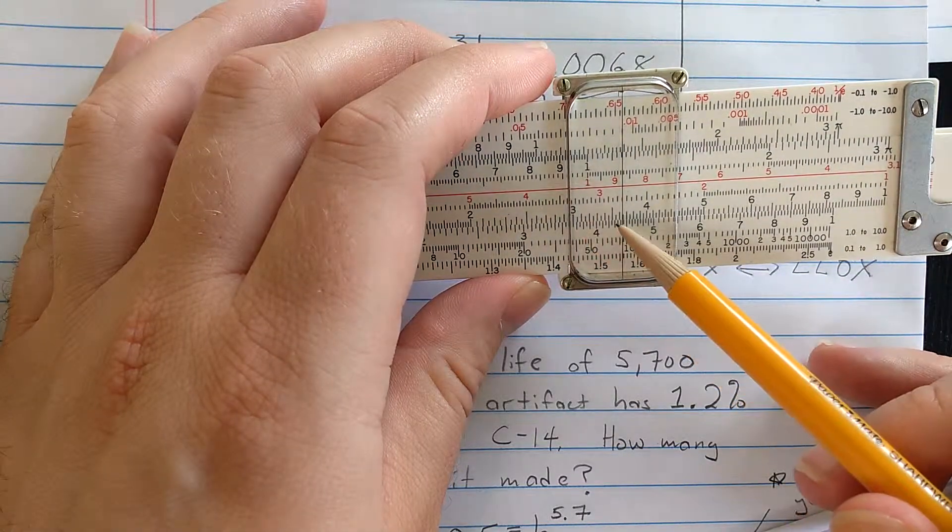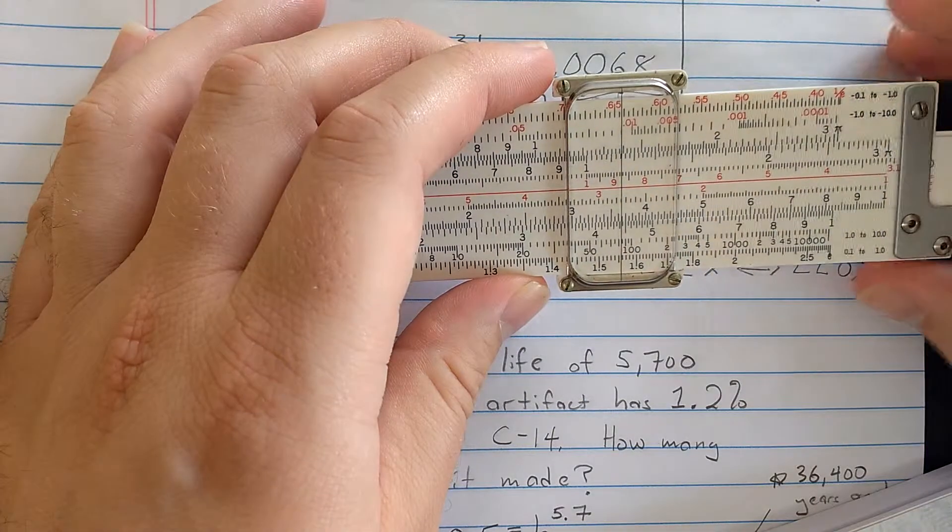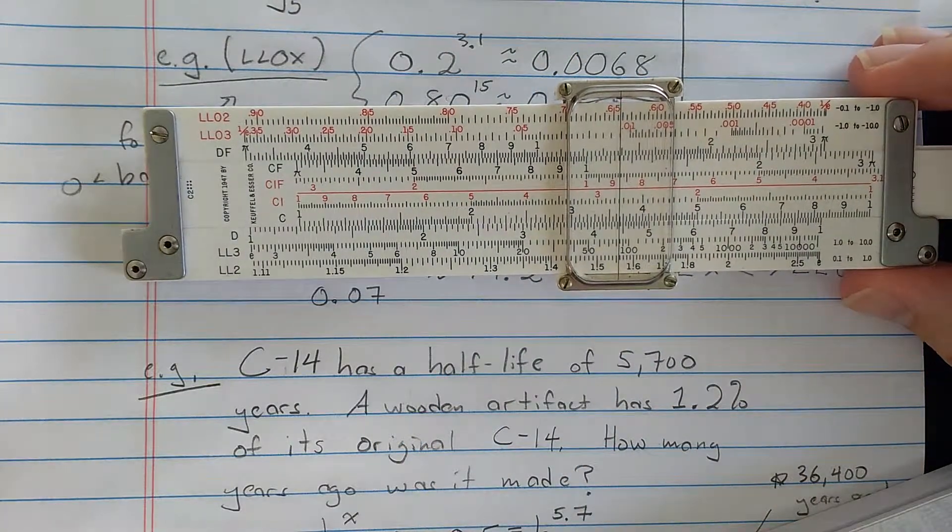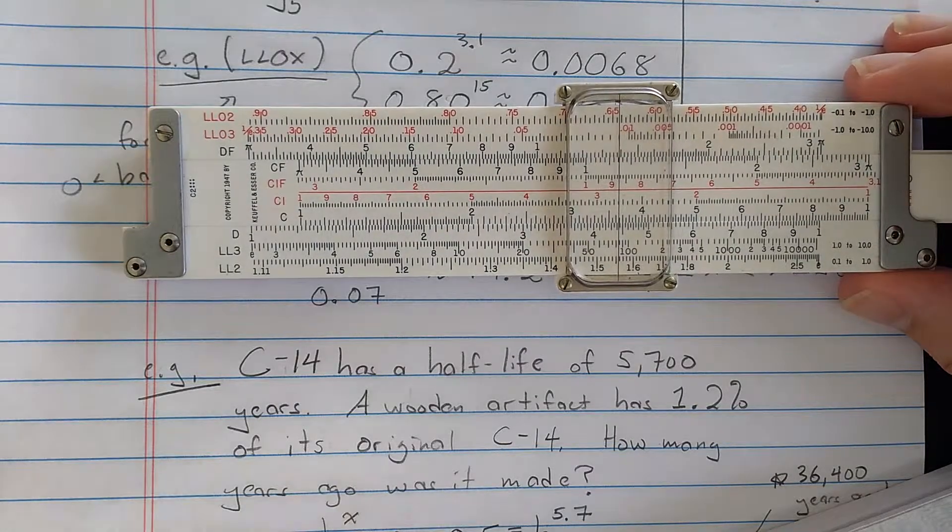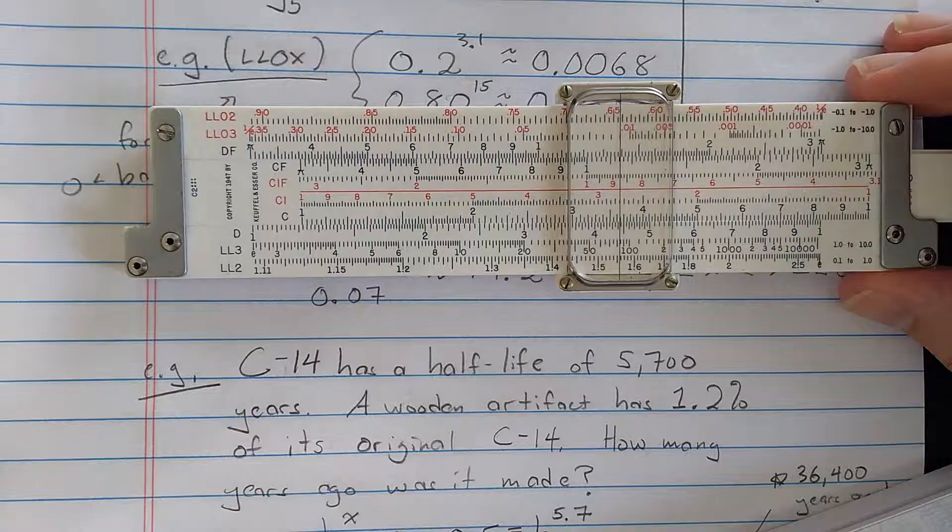Then what I'm going to do is move the cursor here to 0.012. That's for 1.2%. And then I'm going to read the result. Here, 3, 5, 6, 364, which is going to mean 36.4 thousand years ago the artifact was made. 36.4 thousand years ago.